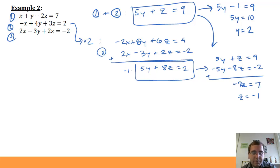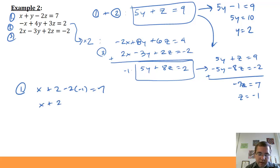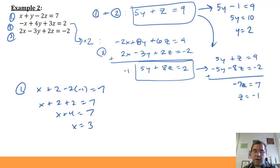Now I just need x. I go back to original equation 1 and plug in y equals 2 and z equals negative 1: x plus 2 minus 2 times negative 1 equals 7. That gives x plus 2 plus 2 equals 7, so x plus 4 equals 7, and x equals 3. The solution set is the ordered triple (3, 2, negative 1).